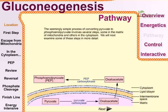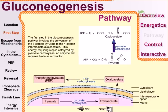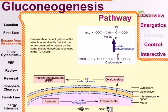This is a two-step process. The very first step of the gluconeogenesis pathway involves the conversion of the three-carbon pyruvate to the four-carbon intermediate oxaloacetate. This energy-requiring step is catalyzed by pyruvate carboxylase, an enzyme that requires biotin as a cofactor.